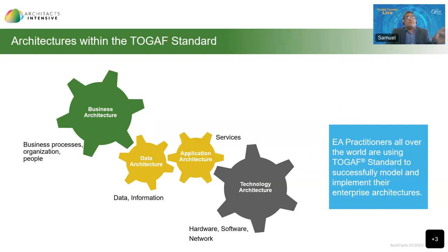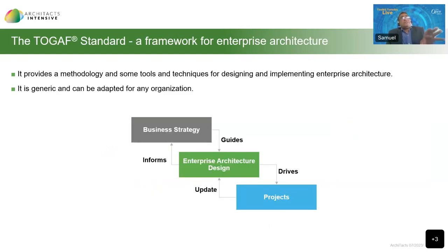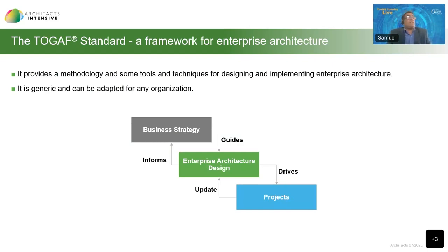Added on to these four domains, there are other domains like motivation, security, and governance that you could define which cut across the primary domains. The TOGAF standard supports the definition of these different domains to address specific concerns your stakeholders might have. The standard itself takes strategy into consideration — looking at the business strategy, it provides a methodology and a set of tools and techniques for designing and implementing enterprise architecture that operationalizes that strategy. Keep in mind that the TOGAF standard itself is very generic and can be adapted for any organization, any situation, any vertical, any domain.